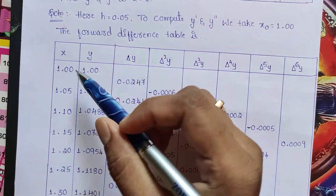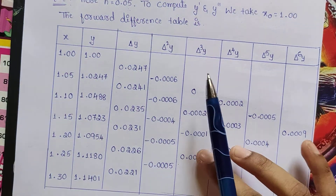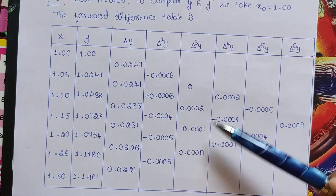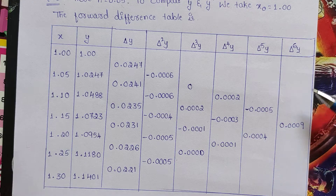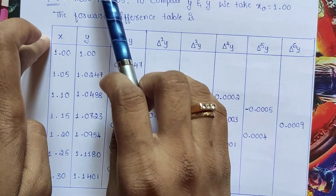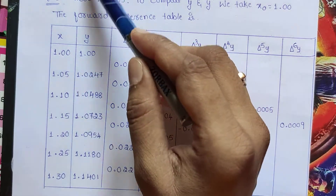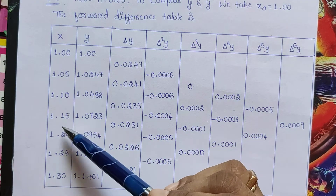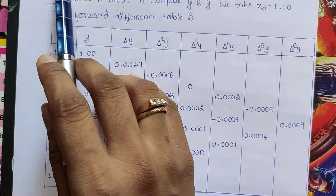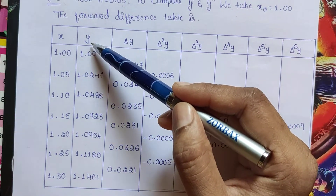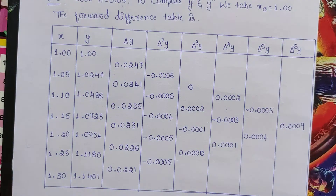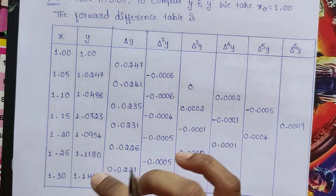The forward difference table has the following columns: x, y, Δy, Δ²y, Δ³y, Δ⁴y, Δ⁵y, Δ⁶y. In the first column, the x values as given in the question are: 1.00, 1.05, 1.10, 1.15, 1.20, 1.25, 1.30. We also substitute the given y values: 1.00, 1.0247, 1.0488, and so on — whatever is given in the table, we substitute in this table.